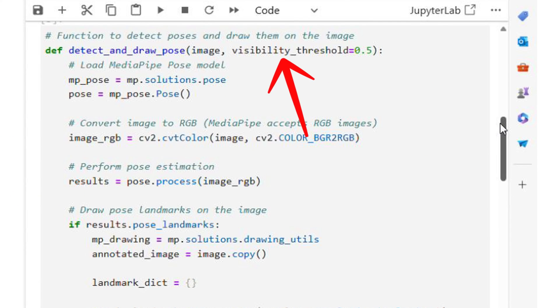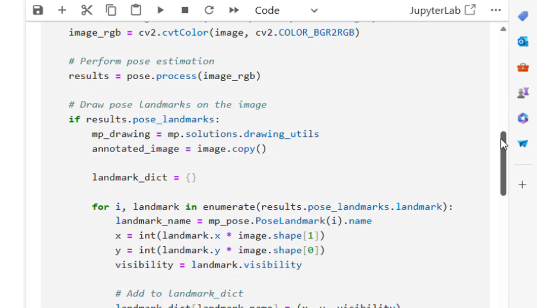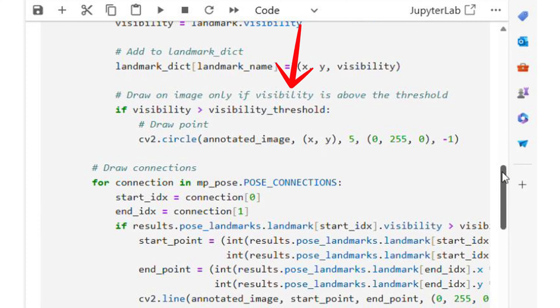I have a parameter here named visibility threshold. I draw only landmark points that have visibility greater than this threshold. MediaPipe provides a visibility score between 0 to 1 for each landmark point. 0 being the point is not visible at all and 1 meaning the point is fully visible. The visibility score is more like how confident MediaPipe's model is about a detected point.